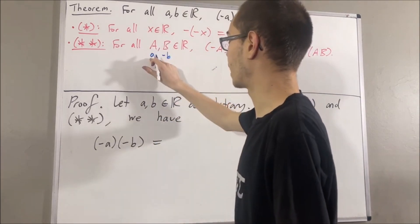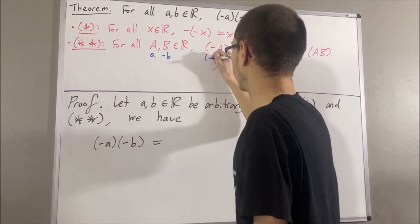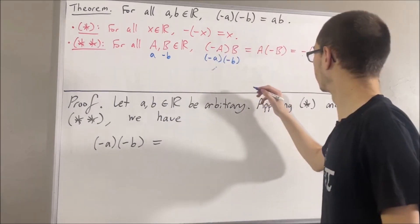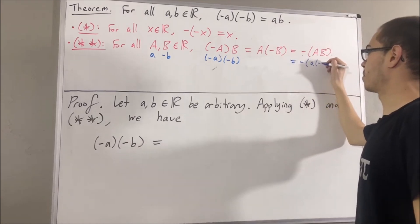we're replacing capital A with A, replacing capital B with negative B. And we have negative A times negative B is equal to the negative of A times negative B.